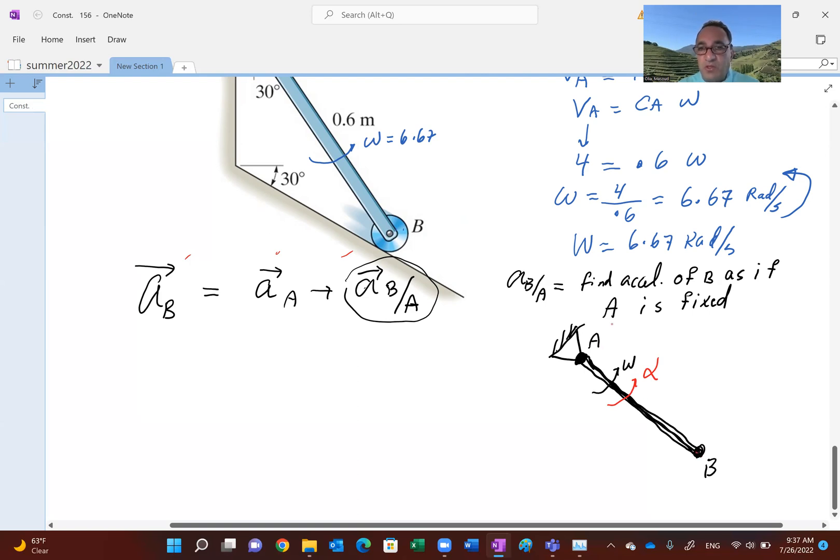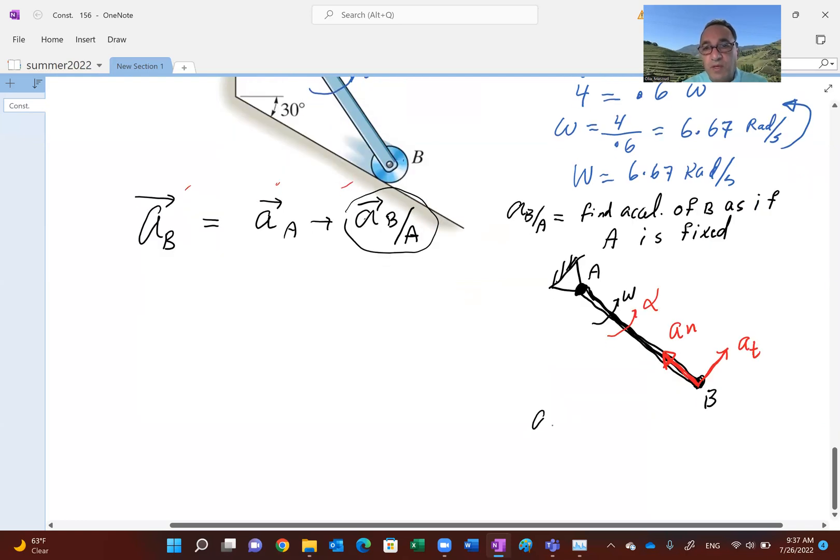All right. So remember, acceleration in pure rotation, if A is fixed, is two components, a normal or centripetal, and a tangential in the assumed direction of alpha. And if you go ahead and figure these out, which should be easy. So AN is what? I'll do it right here for you. So AN is R omega squared. R is the length of the bar, which is 0.6, and the distance between AB. Omega, you see, we needed omega that we calculated. So this, I believe, becomes 26.64 meters per second squared. A sub t is R alpha. R, again, 0.6. Alpha, remember, is unknown. But look at the directions. This is very important. The direction of this, guys. Remember, this is 30 degrees. This is coming down at 30 degrees. So this would be 60. And then if you figure out this angle, that would be 30. So you need that when you plug into this equation.